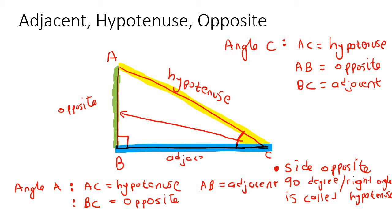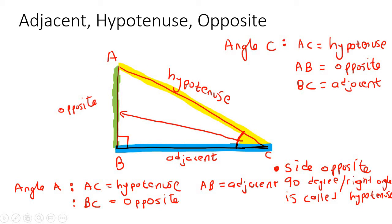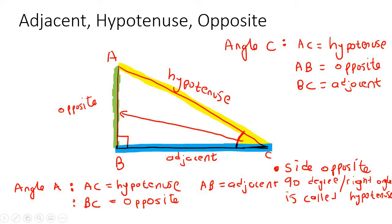So depending on which angle you are looking from, either A or C, the opposite and the adjacent are going to be two different things. We are never, ever going to worry about the 90-degree angle — we're not going to worry about which one is opposite, adjacent, or hypotenuse when looking from there. You are only ever going to look from the non-right angles. So now, if you're feeling comfortable about what adjacent, opposite, and hypotenuse mean, we can start doing some examples.